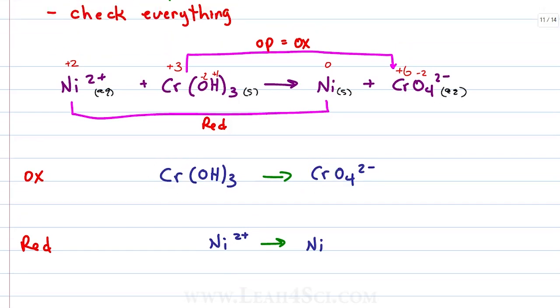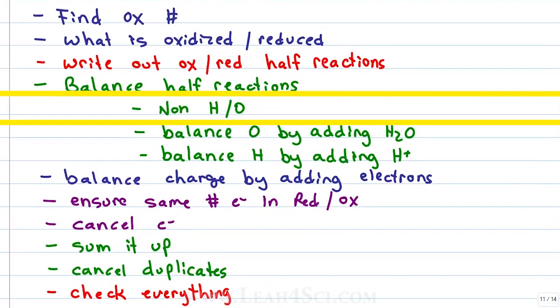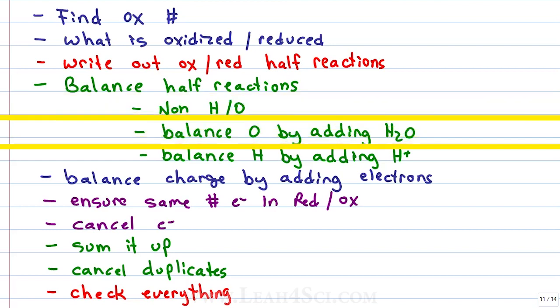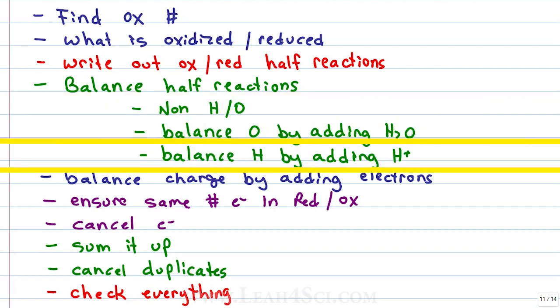Instead remember that once your non-H's and O's are balanced, you don't touch them. If you need to change your oxygen or hydrogen number, you do so for oxygen by adding H2O and hydrogen adding H+.